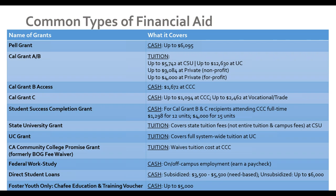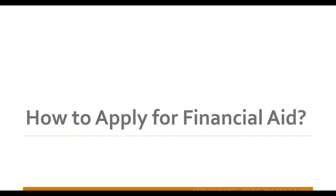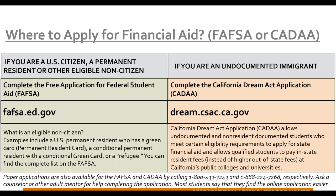Now I'll turn it over to Jessica Petros to walk through the FAFSA application. There are two different applications for financial aid. The first is the FAFSA, the Free Application for Federal Student Aid, for students who are U.S. citizens, permanent residents, or other eligible non-citizens such as those with a green card. They can fill it out at the website listed. The other option is for eligible undocumented immigrants: the California DREAM Act application. We recommend filling out applications electronically to reduce and minimize errors.